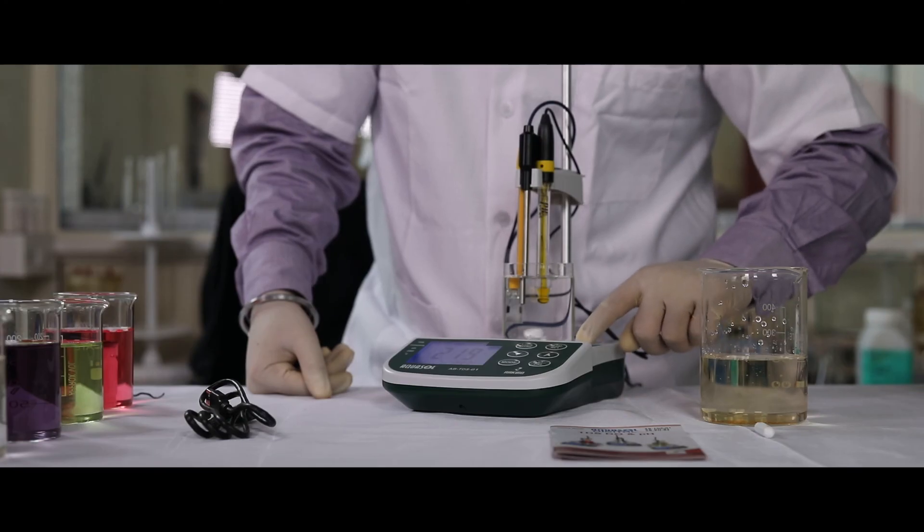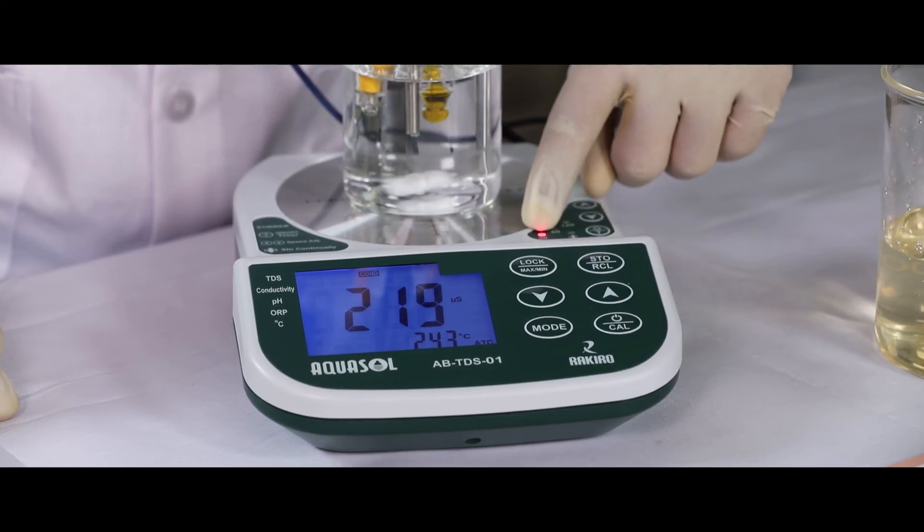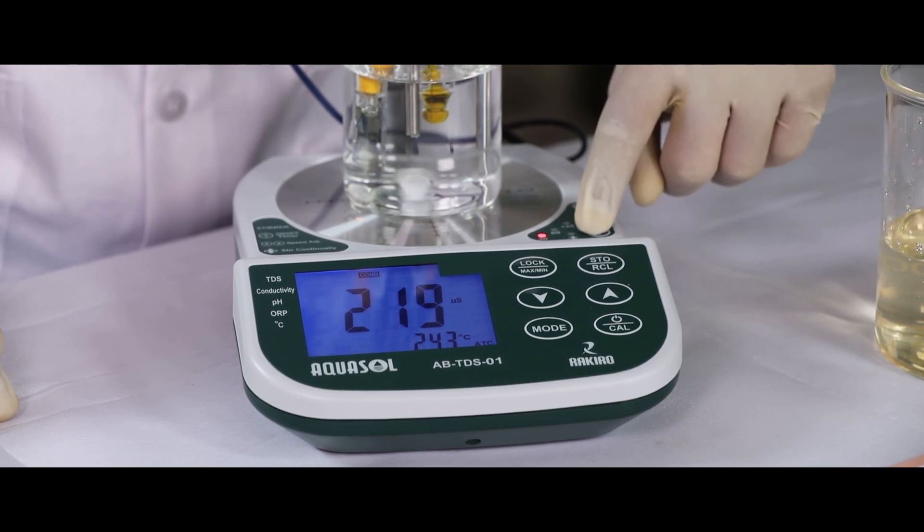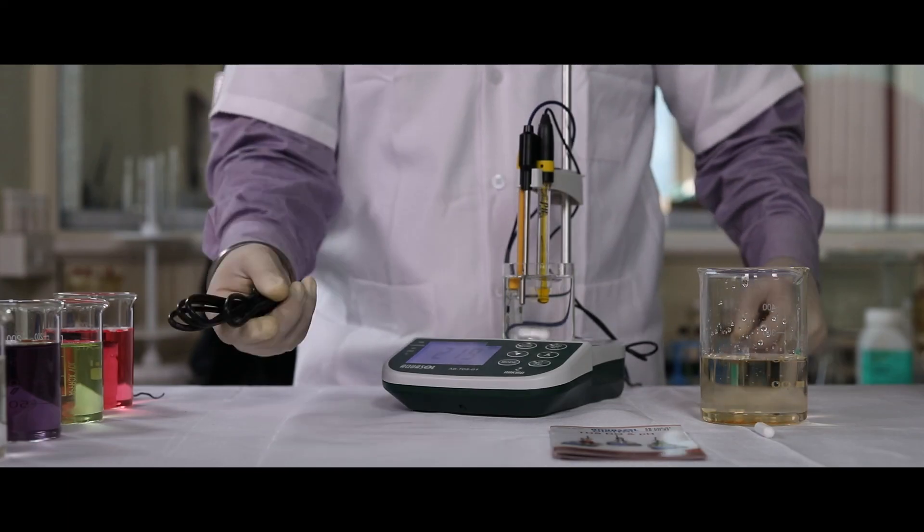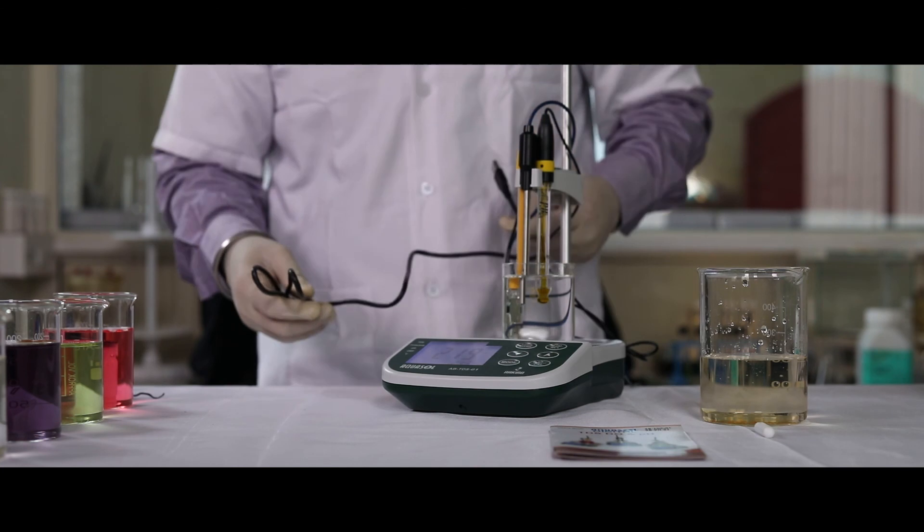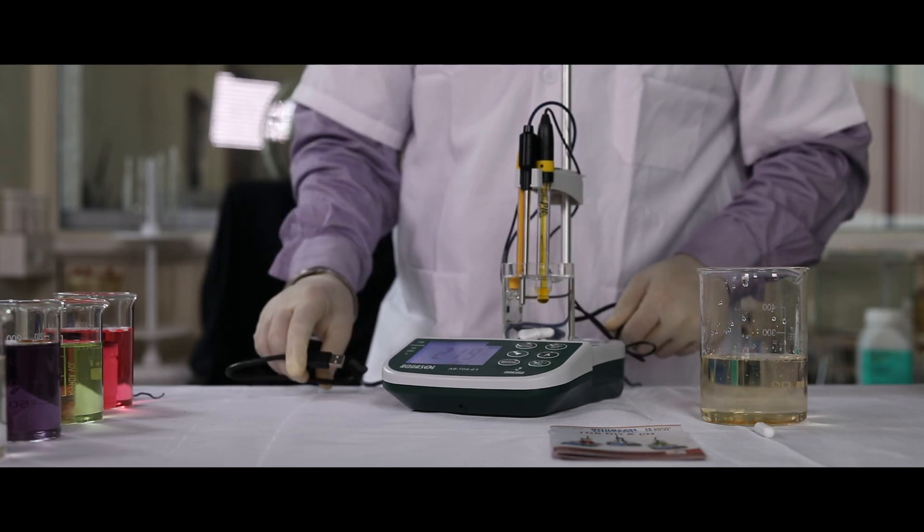You can set the stirrer timer by pressing the power button. Stirrer speed can be increased or decreased using up and down arrow. You can connect USB to transfer the data and connect it to the laptop.